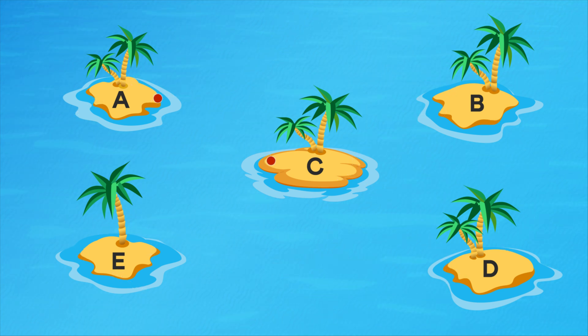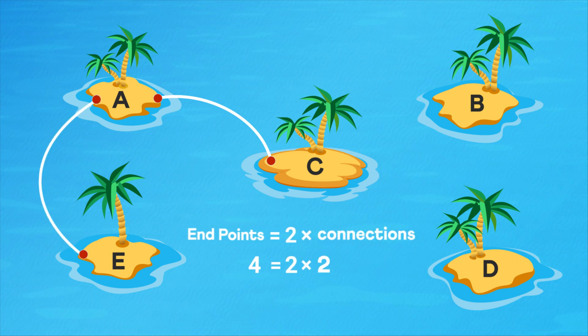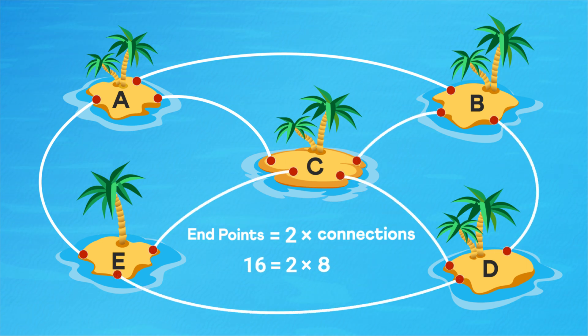Here's another way to look at it. Since each connection has 2 endpoints, the total number of endpoints will be twice the number of connections. And that means the number of endpoints will always be even.